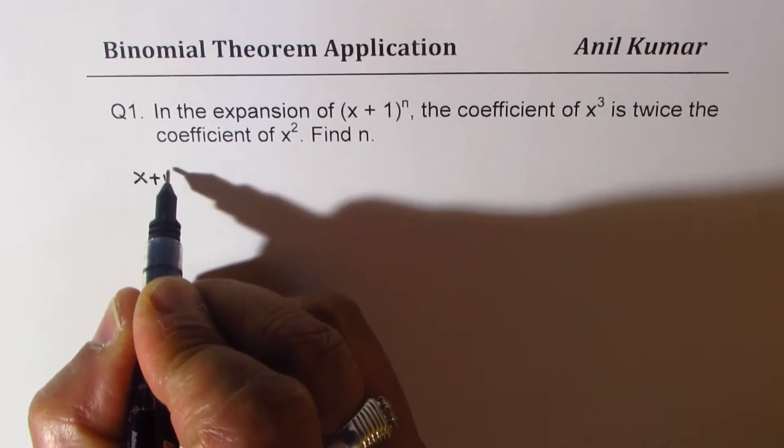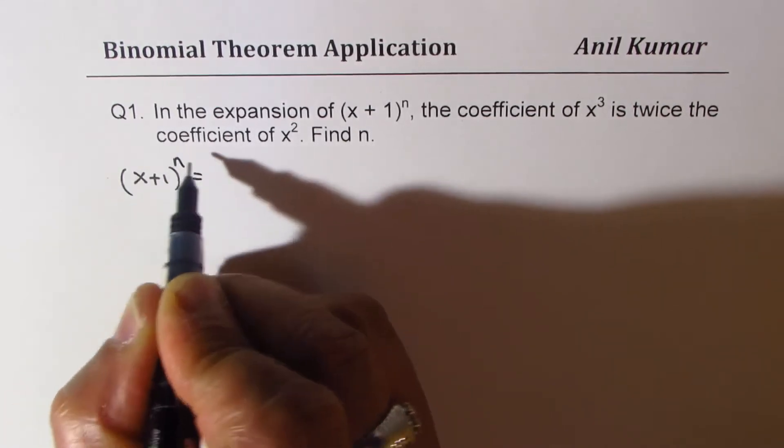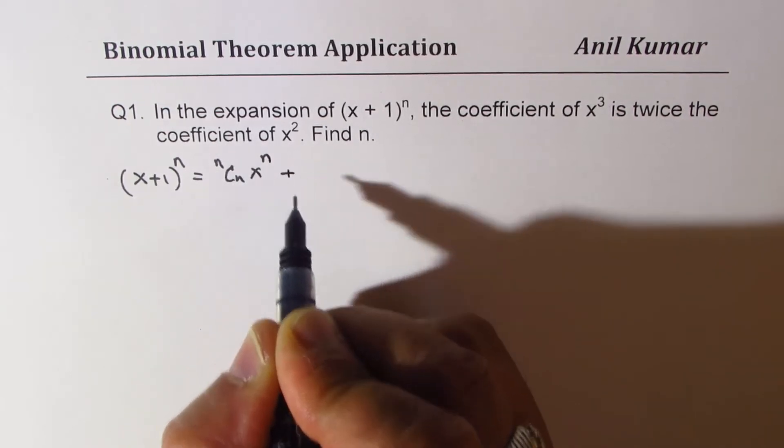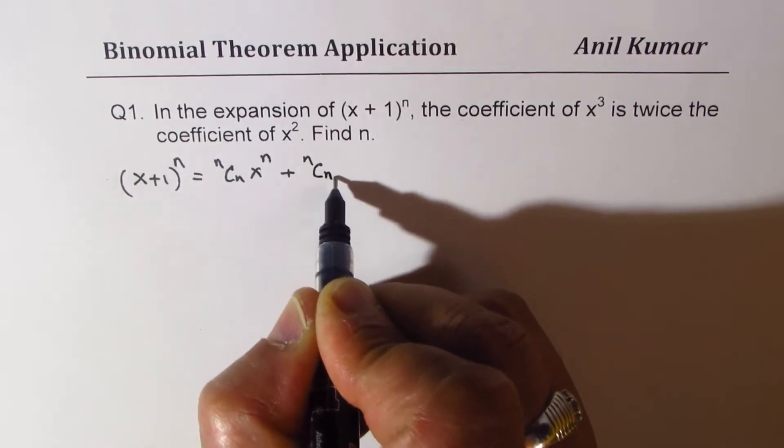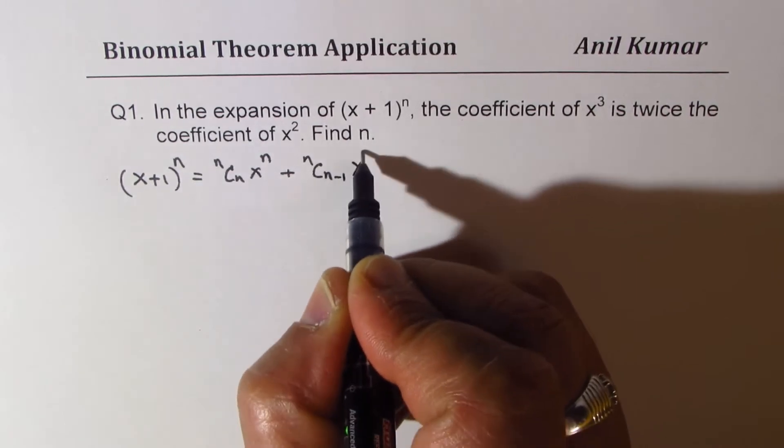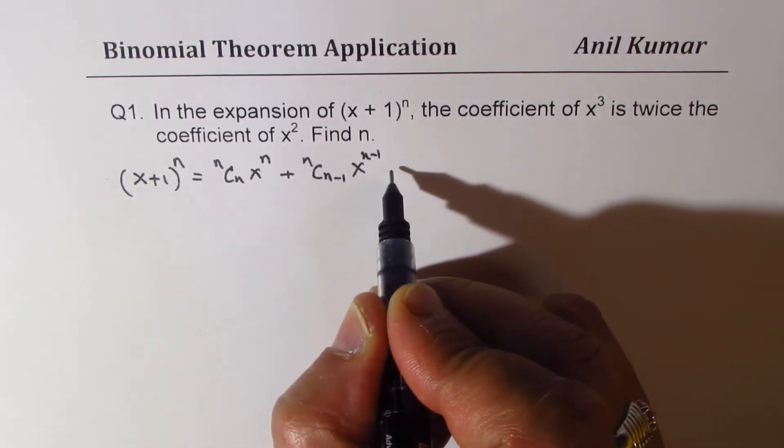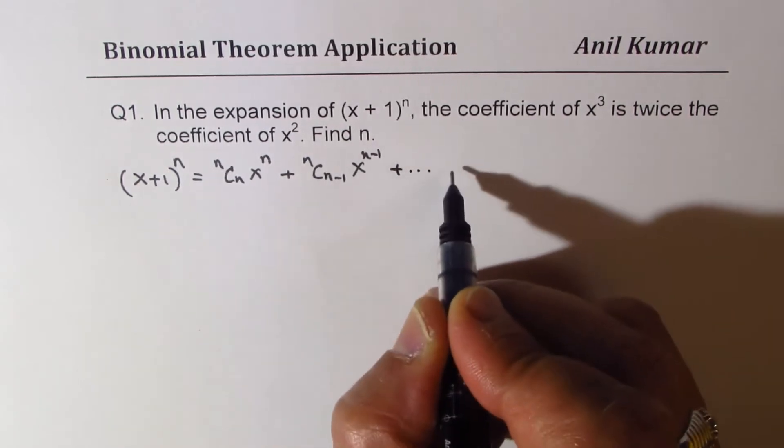We have (x + 1)^n. So if we expand, we get nCn x^n plus nC(n-1) x^(n-1) times 1, plus so on.